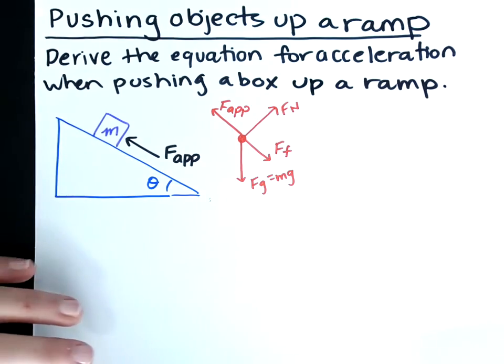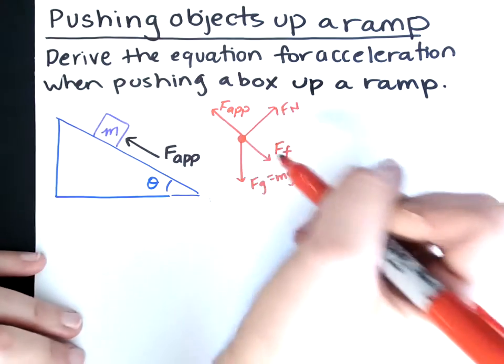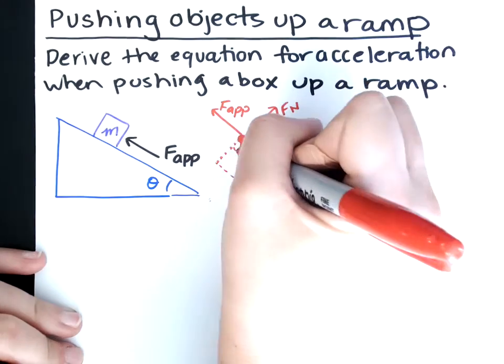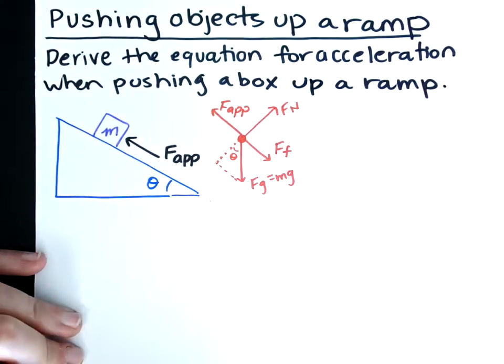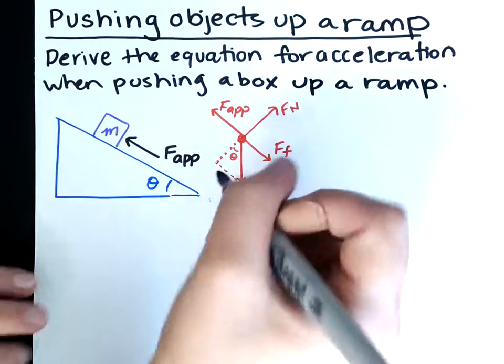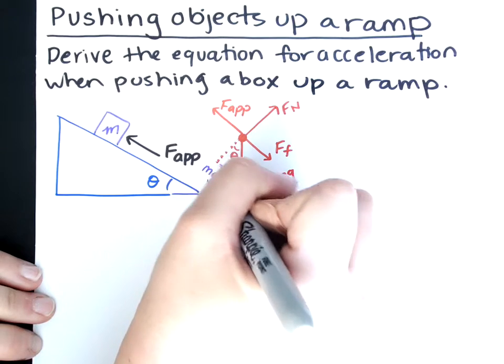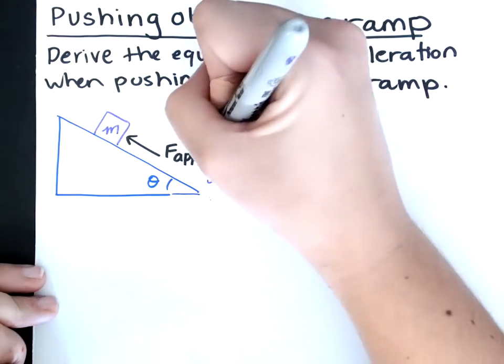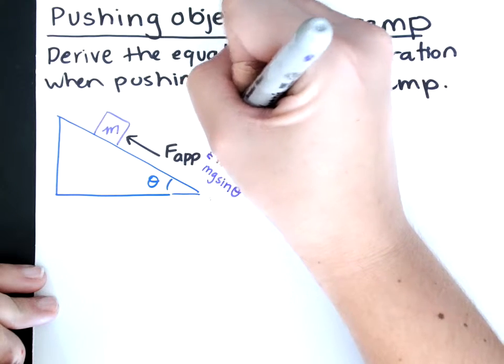Okay, so we also need to break apart our force of gravity. Here's our theta. So this component right here is mg sine theta. And our y component is mg cosine theta.